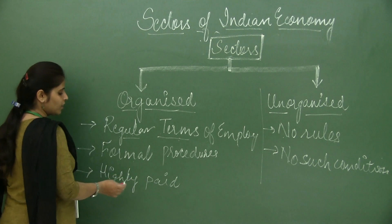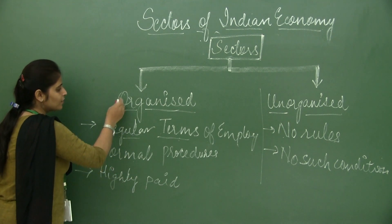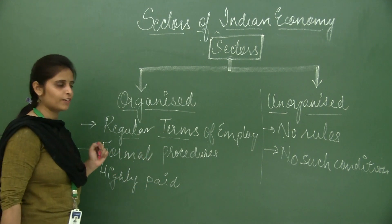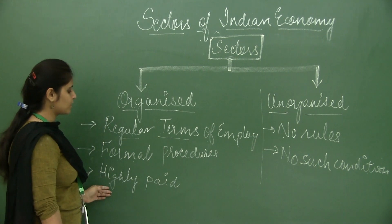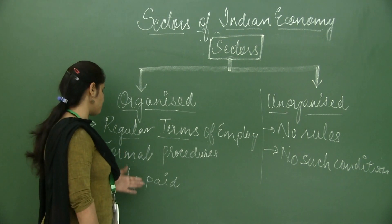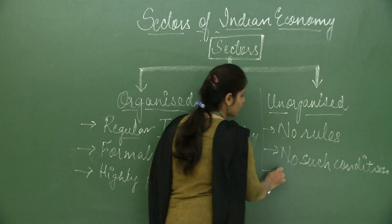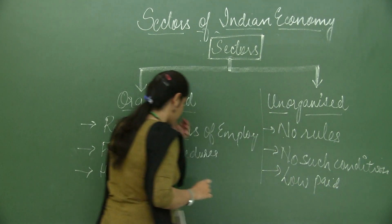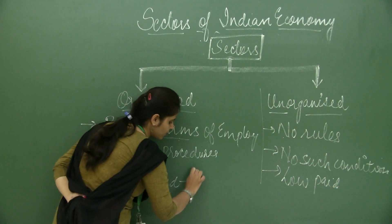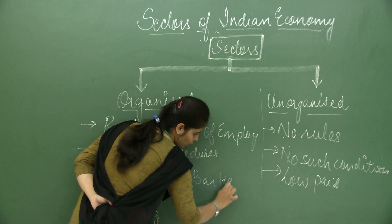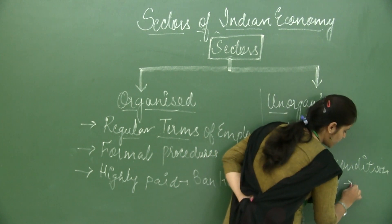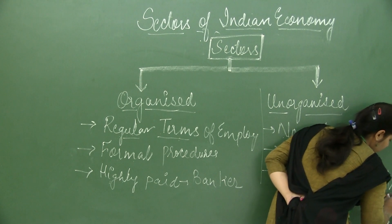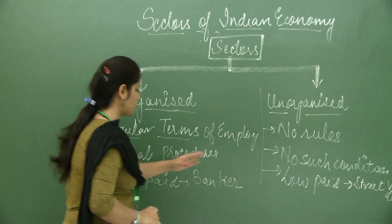Payment matters very much in the organized sector. A bank employee earns much more than a street vendor. In the organized sector, the workers are highly paid, whereas in the unorganized sector they are low paid. We can take the example that a banker is working in an organized sector, while a street vendor or a laborer is working in an unorganized sector.